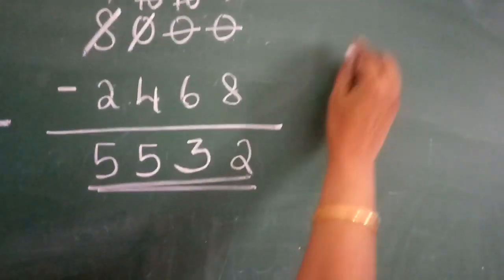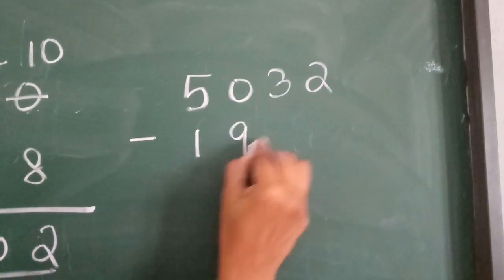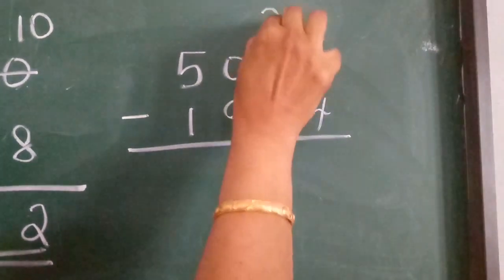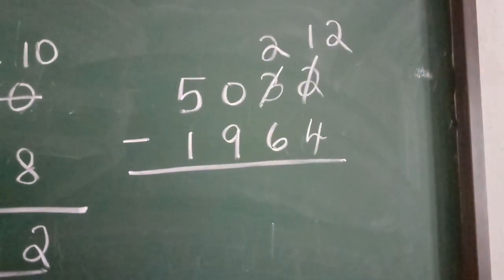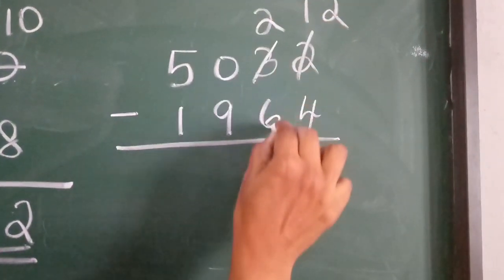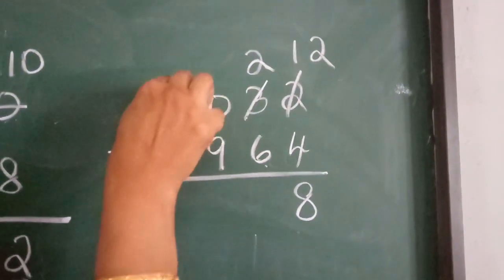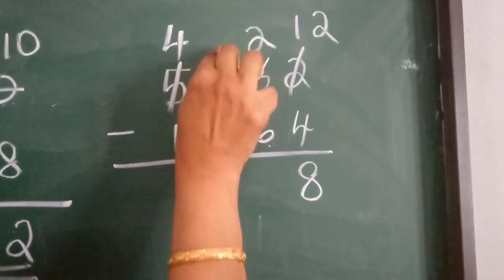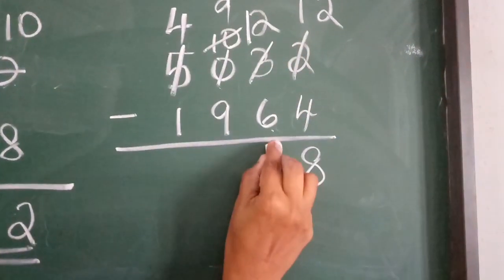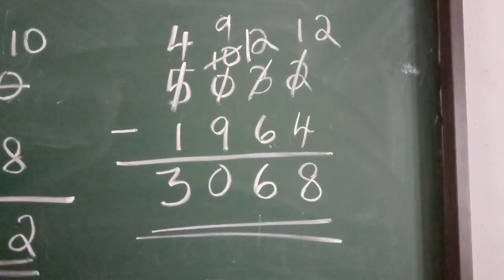One more question: 5,032 minus 1,964. 2 minus 4 is not possible, so you take 1 from the tens place — this becomes 2 and this becomes 12. 12 minus 4 equals 8. Now, 2 minus 6 is not possible, and the previous number is 0. So you move to the thousands place — 5 becomes 4, and that position becomes 10. Take 1 from it: it becomes 9, and the tens becomes 12. 12 minus 6 equals 6. 9 minus 9 equals 0. 4 minus 1 equals 3. The answer is 3,068.